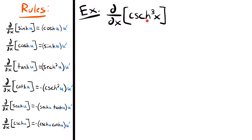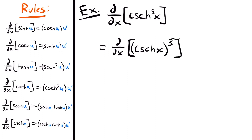Next, we find the derivative of hyperbolic cosecant cubed of x. We rewrite this as the derivative of hyperbolic cosecant of x, quantity cubed. This lets us see the chain rule structure: an inside function of hyperbolic cosecant and an outside function of the quantity cubed. We start with the derivative of the outside using the power rule: multiply the exponent down, subtract one, giving 3 times hyperbolic cosecant of x to the power of 2. Then we multiply by the derivative of hyperbolic cosecant.